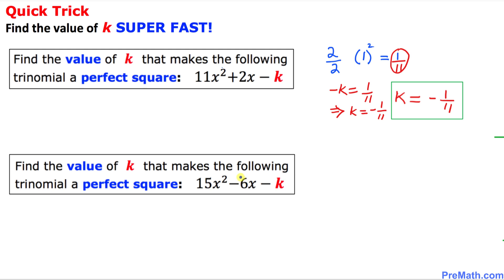Here is our next example. In this trinomial, our middle number — the coefficient of x — is negative 6. We always divide negative 6 by 2, which gives us negative 3. Then we square that to get 9. Now let's focus on the leading coefficient, which is 15.